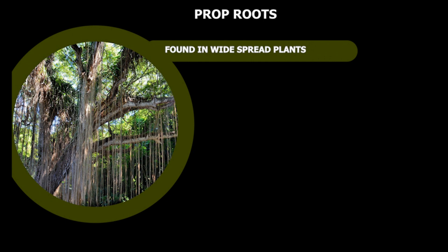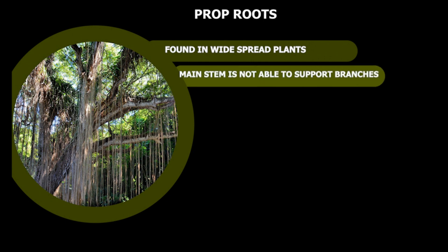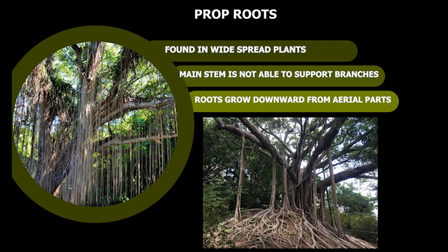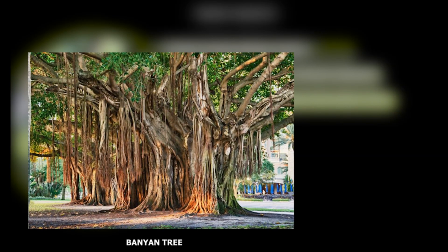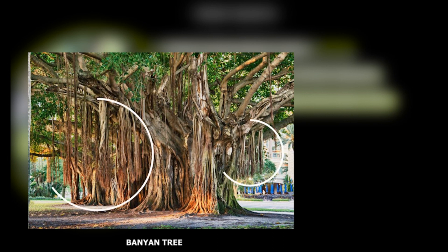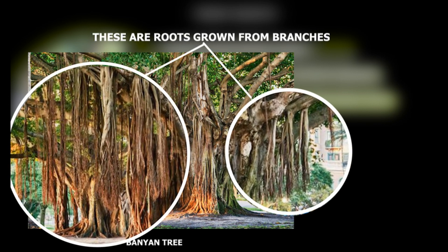Prop roots are found in widely spread plants. Due to the spread, the main stem is not able to support all the branches. In such plants, roots from horizontal branches grow downward to provide support. You must have seen a banyan tree — it looks like the tree has multiple stems, but in reality, they are roots grown from branches.